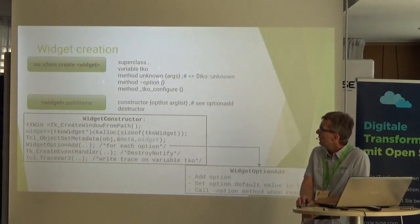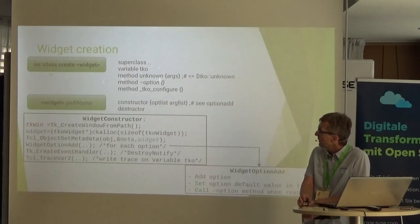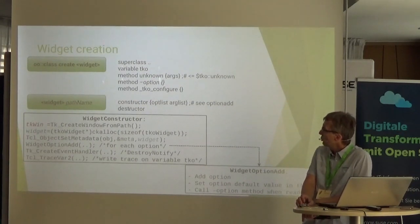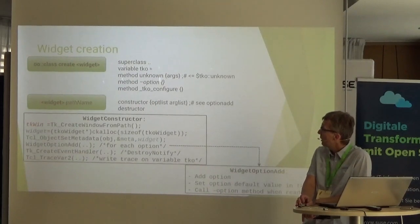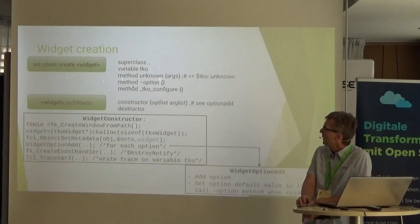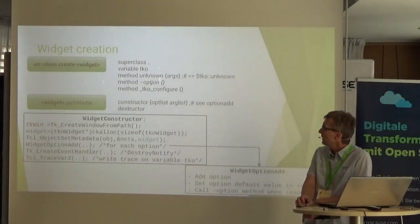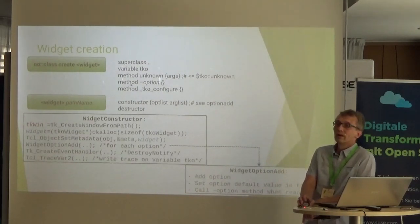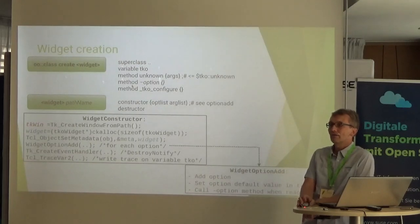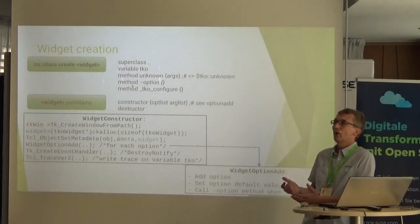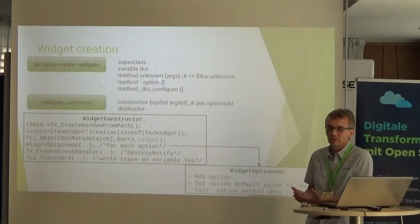The widget is created with the OO class command. You have to define a superclass, array variable, and unknown method. For each option, an option method is defined. There is also a TKO configure method, called after configuring an option — it ensures that when you change many options, the redraw is only performed after all options are set.